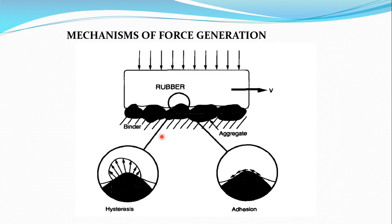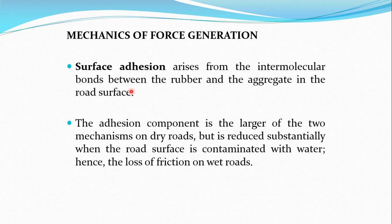The primary mechanisms of traction force generation are due to friction. Two mechanisms are discussed: the first is adhesion, also known as self-adhesion, and the second is hysteresis. Surface adhesion arises due to the intermolecular bond between the rubber and the road surface or the aggregate in the road surface. Due to this adhesion, a traction force is generated and the vehicle starts moving forward.